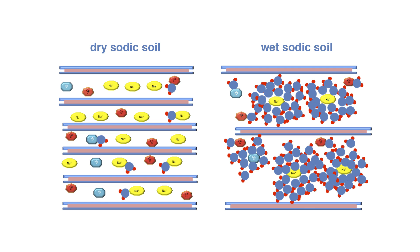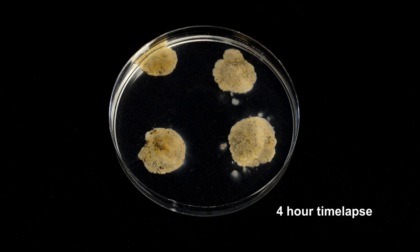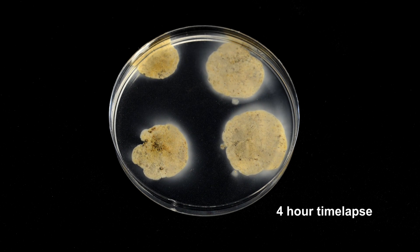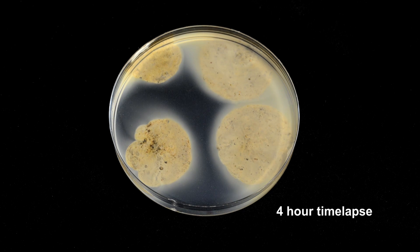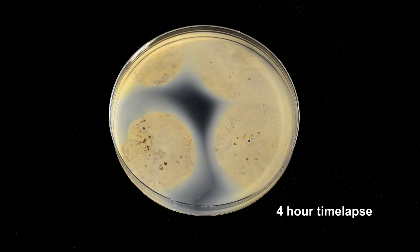These diagrams show how sodicity impacts on soils. There is some complex chemistry involved, but the important thing is that when soils are wet, the sodium ions attract water molecules which push the clay sheets apart, causing dispersion. We can see how these soils collapse and disperse with time-lapse in the laboratory. The dispersed clays clog the pores of the soil, making it very hard and dense especially when dry — there's not enough space for water, air and roots, making it a very difficult environment for plants to grow in.